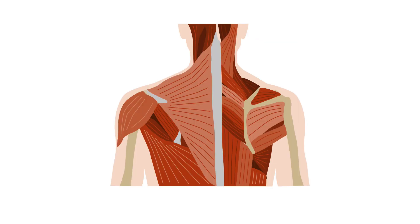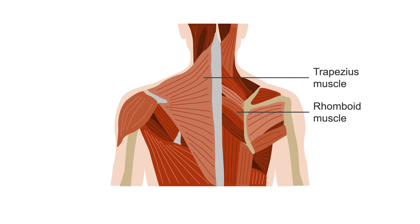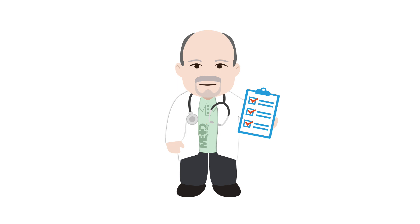One should assess for active trigger points in the muscles of the neck and around the shoulders, including the rhomboids and trapezius. This search may lead the skilled examiner to extend the examination into the upper extremities and torso. Charts of common trigger points are available outlining these regions.